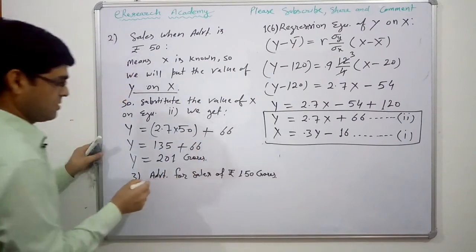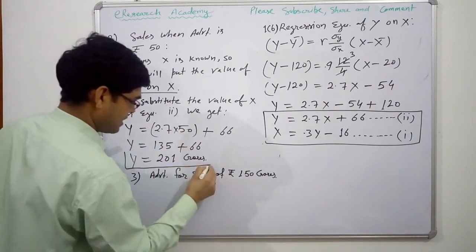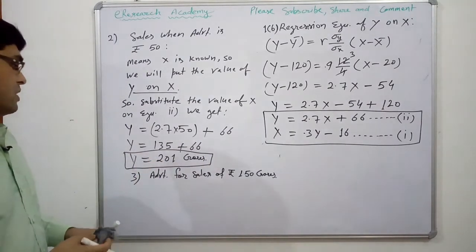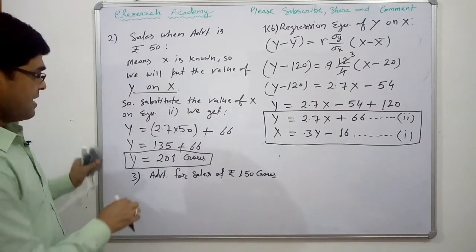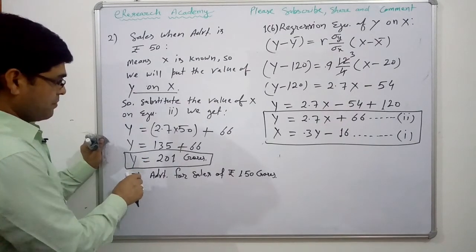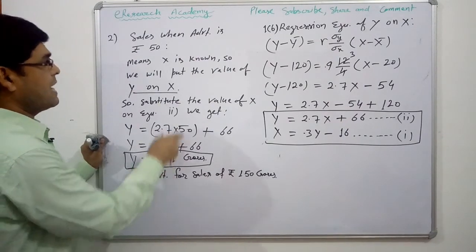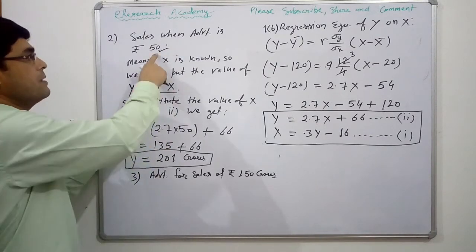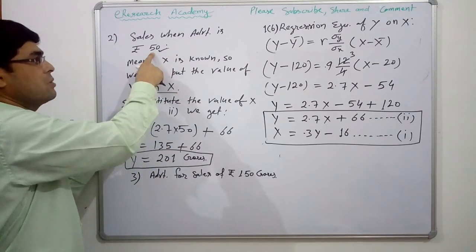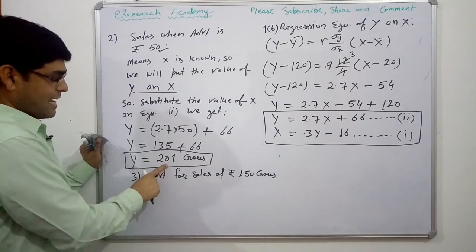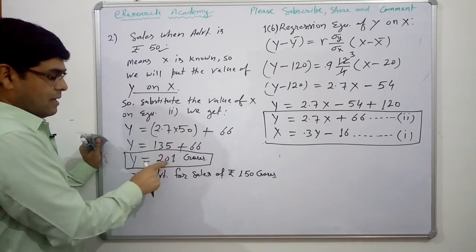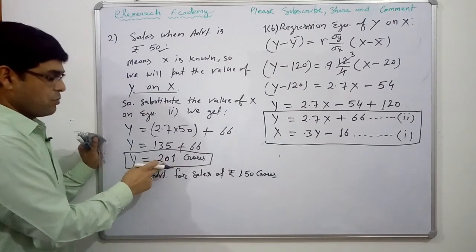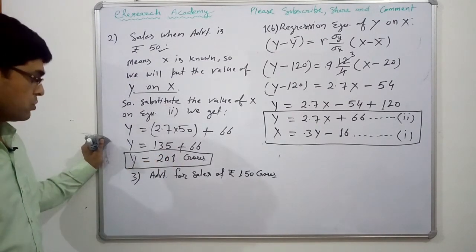Substituting X equals 50: Y equals 2.7 times 50 plus 66, which gives Y equals 135 plus 66, so Y equals 201 crore. Our second answer is sales of 201 crore rupees when advertisement is Rs.50 crore.